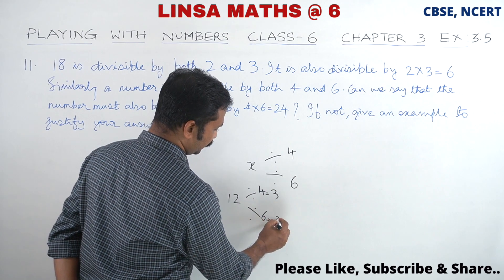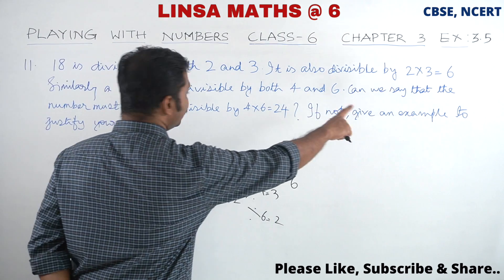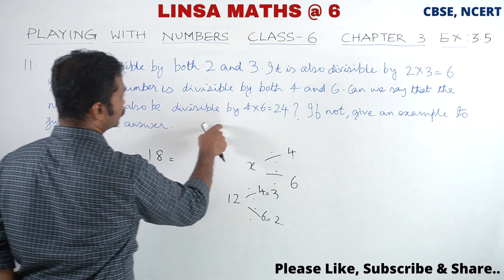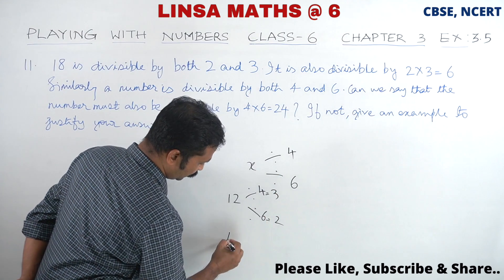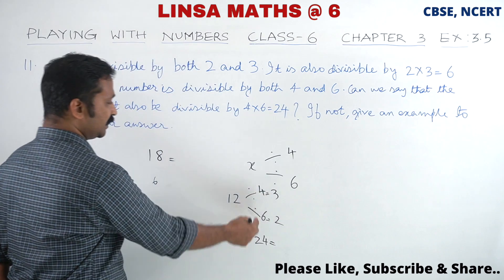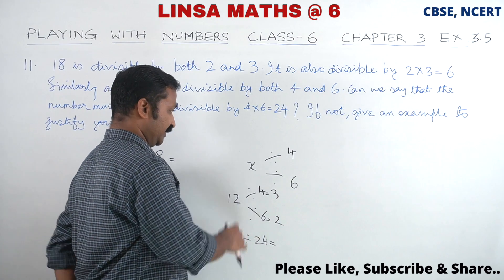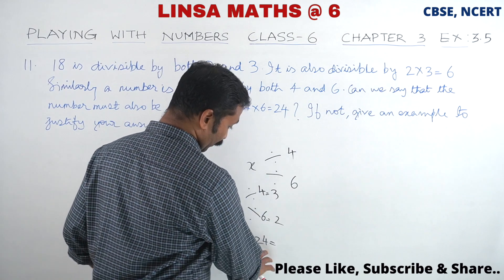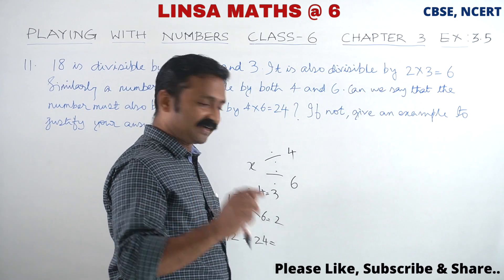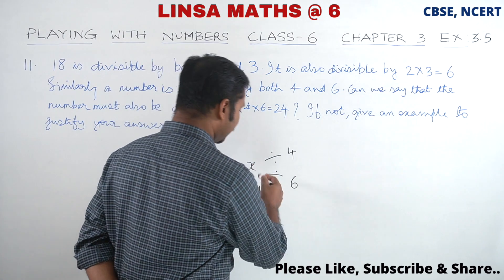So let's see. Take 12. 12 divided by 4 equals 3, 12 divided by 6 equals 2. But 12 divided by 24 doesn't give us a natural number.